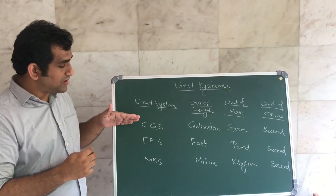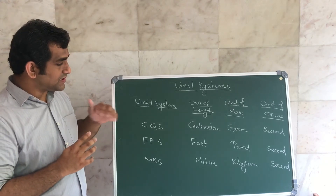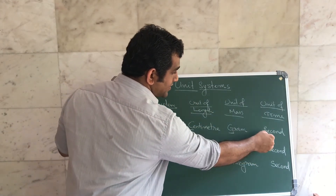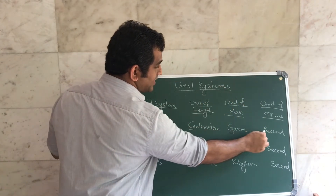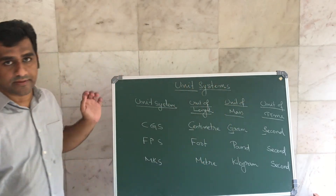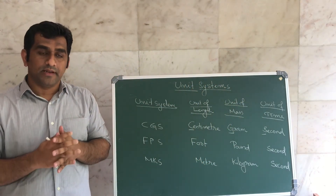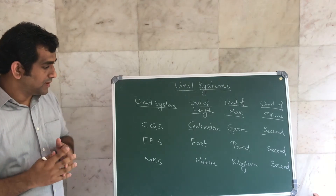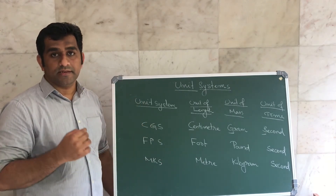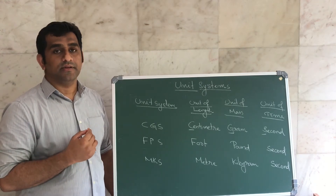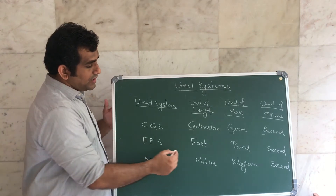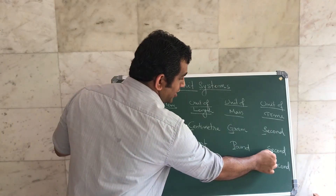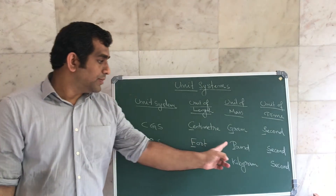The CGS system is introduced by France. The FPS system is a British system. In the FPS system, the unit of length is foot, the unit of mass is pound, and the unit of time is second.